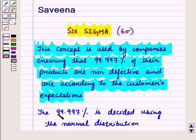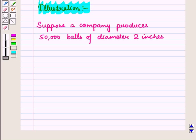Let us understand it with the help of an illustration. Suppose a company produces 50,000 balls of diameter two inches.